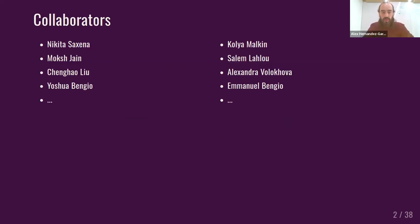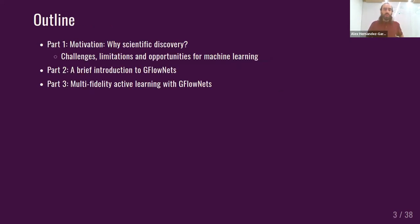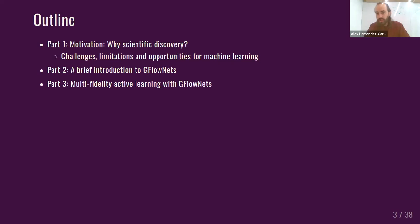Let me mention some of the main collaborators for the work I'm going to present — especially Nikita, who is a student who did great work on this very project, and then other collaborators like Moksh, Cheng Ha, Collier, Salem, Alexandra, Emmanuel, and Yoshua Bengio himself. What I'm going to talk about is first a brief motivation of why I'm working on scientific discovery problems, what are the challenges in applying machine learning for scientific discovery, which is the motivation to use GFlowNets. Then I will dedicate the core of the presentation to multi-fidelity active learning with GFlowNets as a sampling or generative method.